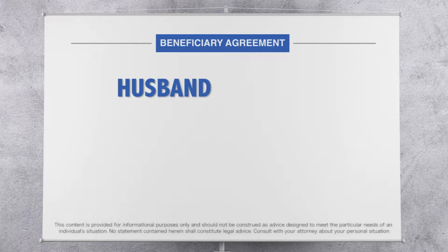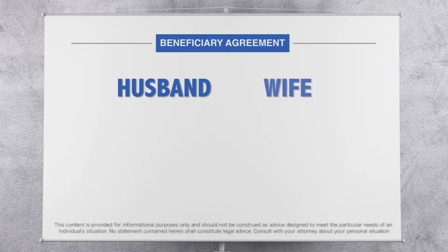For example, let's say you're a husband and a father, and you own a life insurance policy. Typically, your primary beneficiary will be your wife. That means if you die and your wife is still alive, your wife will receive all the proceeds of that account. The wife in this scenario is considered a primary beneficiary.